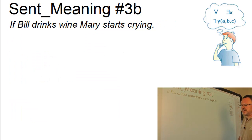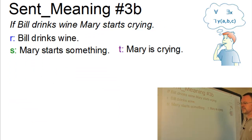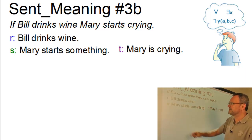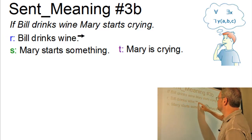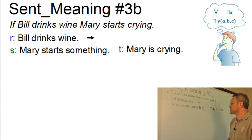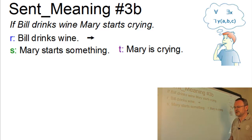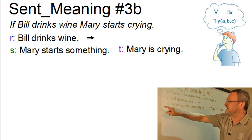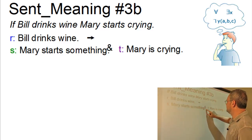In our second example we have an implication of the type: if R — Bill drinks wine — then S — Mary starts crying. S itself is a complex proposition of the type S and T.